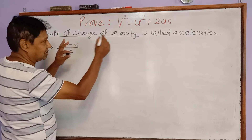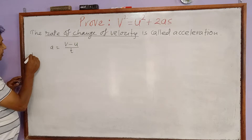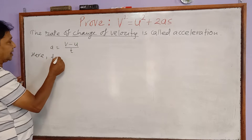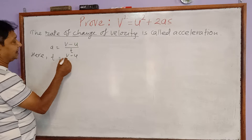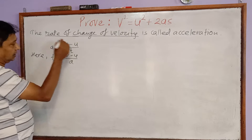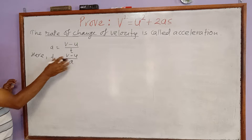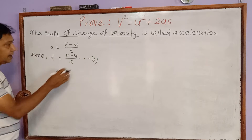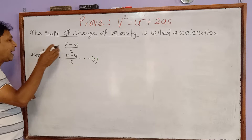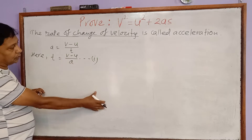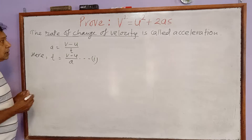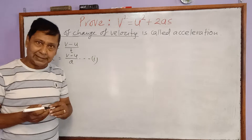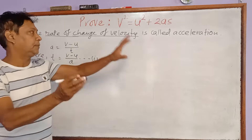This is exactly the rate of change of velocity. Now, we can rearrange to get T equal to V minus u divided by A, by simple mathematical simplification. I will take this as equation 1, because I am planning to use this equation in another equation later. So equation 1 is: T equals V minus u divided by A.